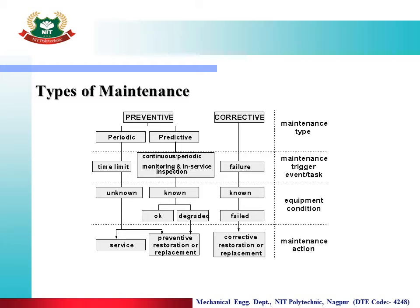Next is predictive maintenance. Suppose we are doing periodic maintenance, but before the scheduled periodic maintenance, our observations show there is some leakage, some chances of breakdown, or the turbine sound is changing. In that case, we do not wait for failure — we perform maintenance before the failure occurs. That is called predictive maintenance.